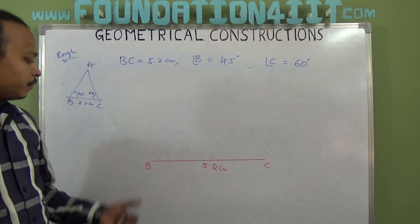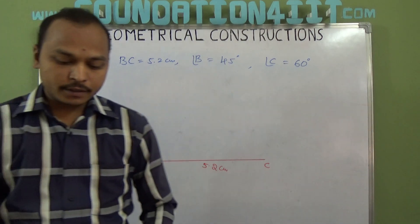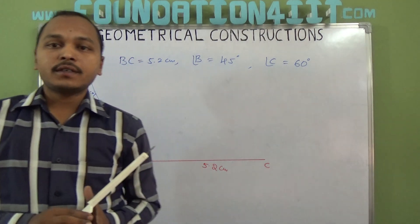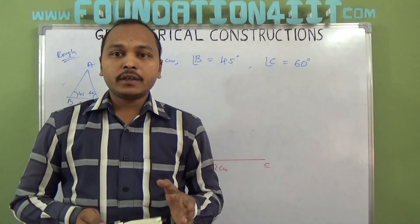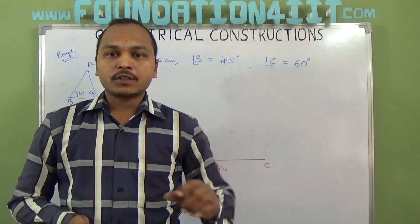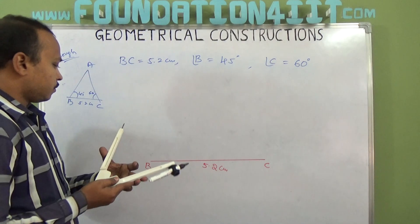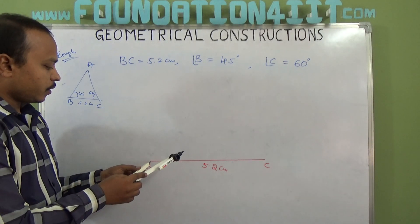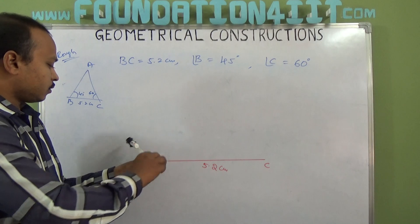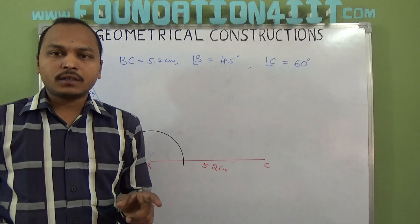According to the diagram, first we need to construct 45 degrees at angle B. 45 degrees is half of 90, and 90 is half of 180. So first we'll make 180 degree arcs, then bisect to get 90, then bisect again. With a reasonable radius from B, draw an arc.